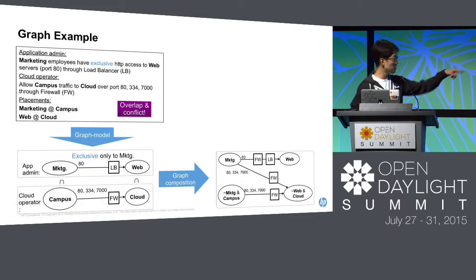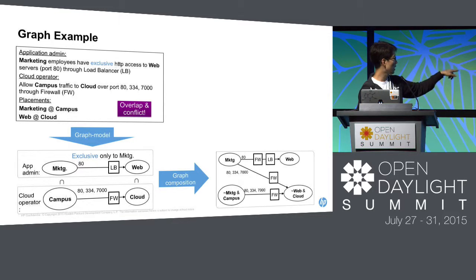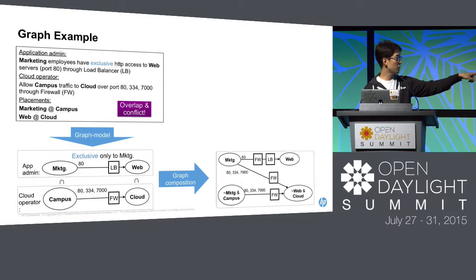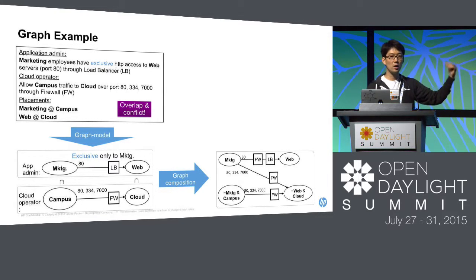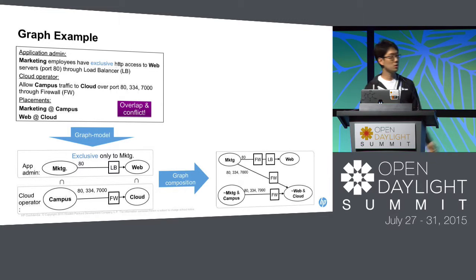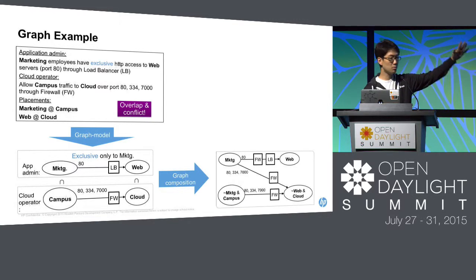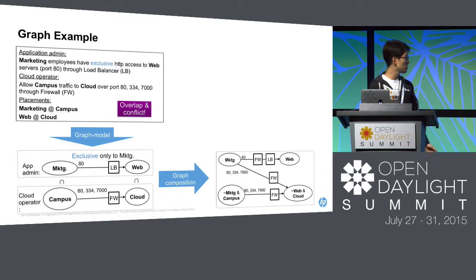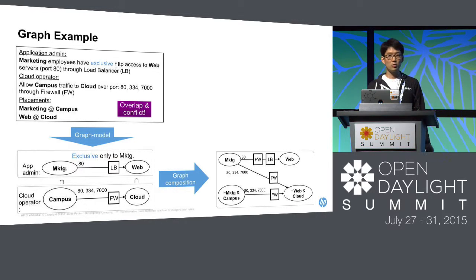In the composed graph, traffic from marketing to web goes through two boxes — firewall required by the cloud operator and load balancer required by the application administrator. There is no edge from non-marketing campus users to web because that's blocked by the application administrator intent. This shows the benefit of using graph abstraction to express intent and doing composition in the graph domain.